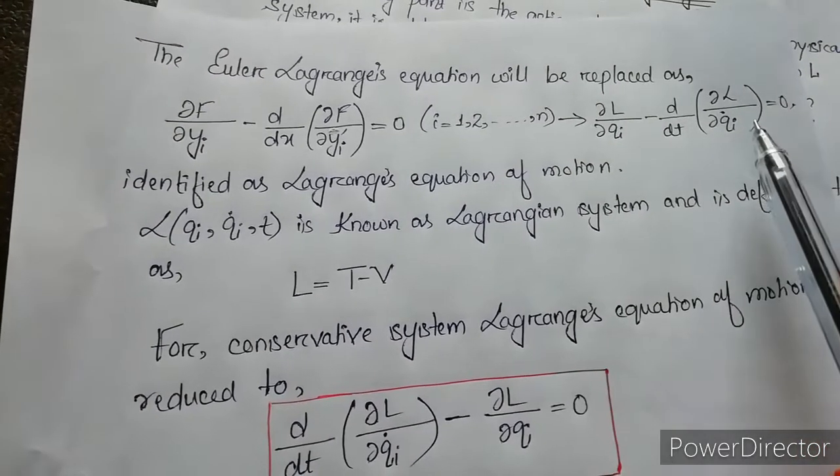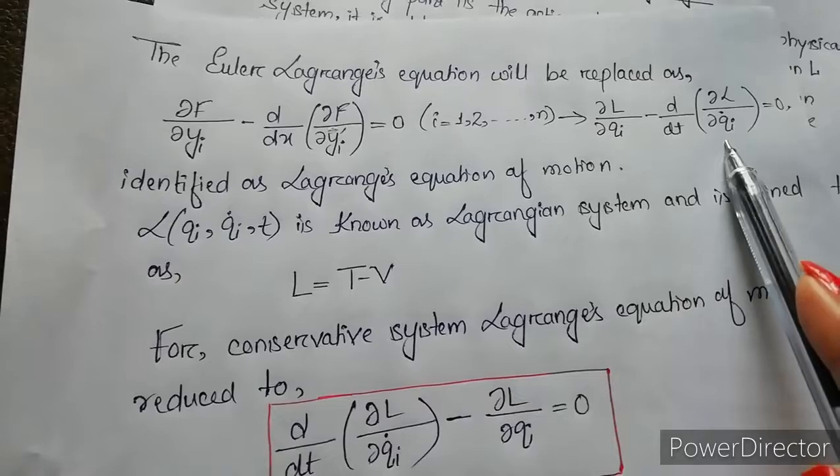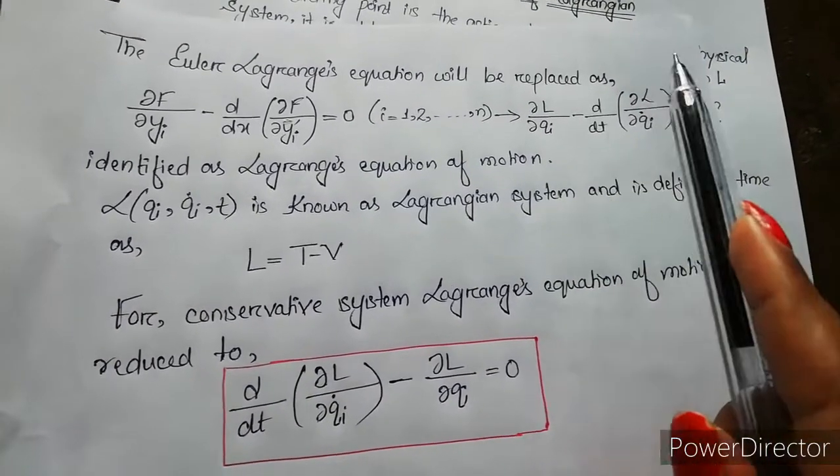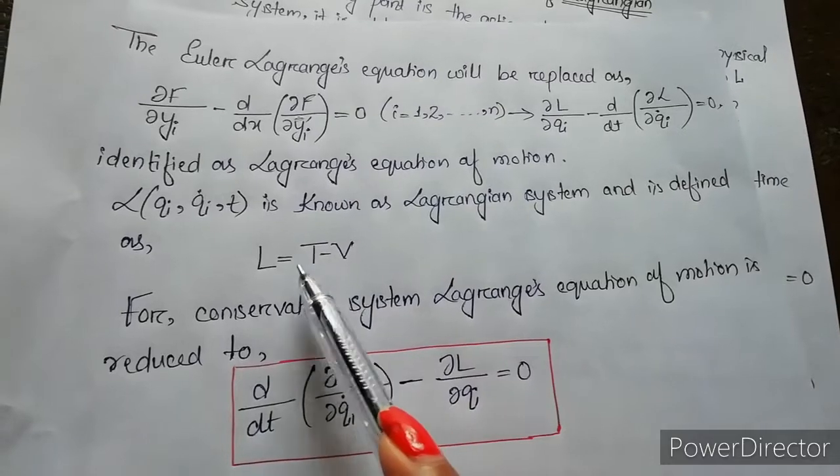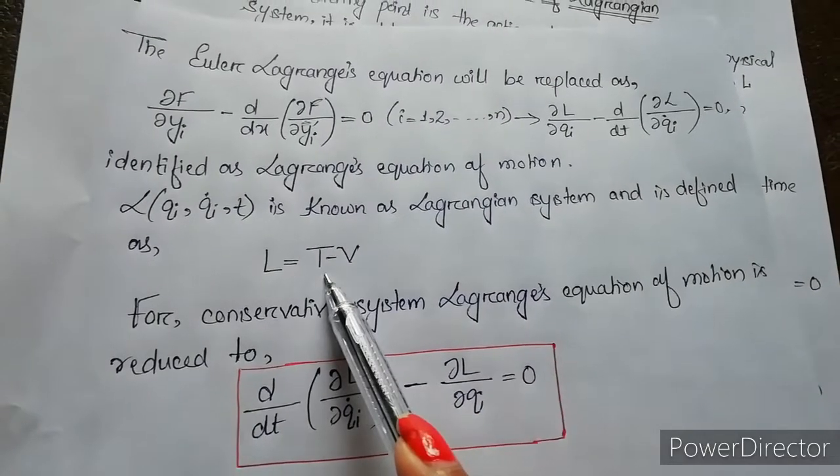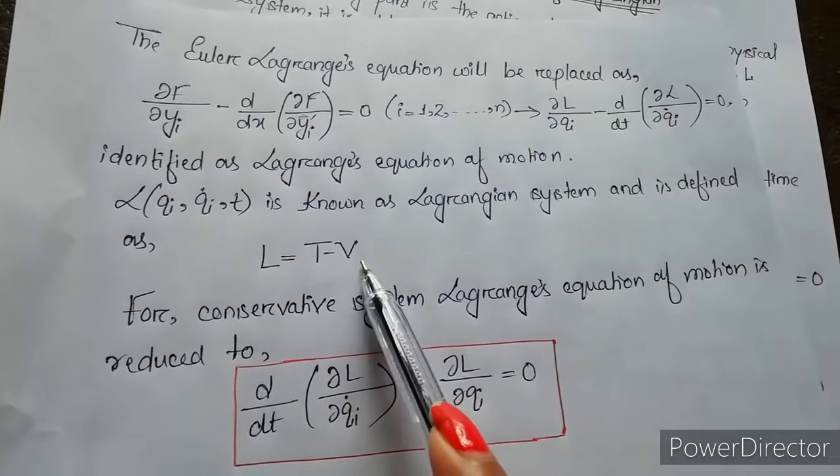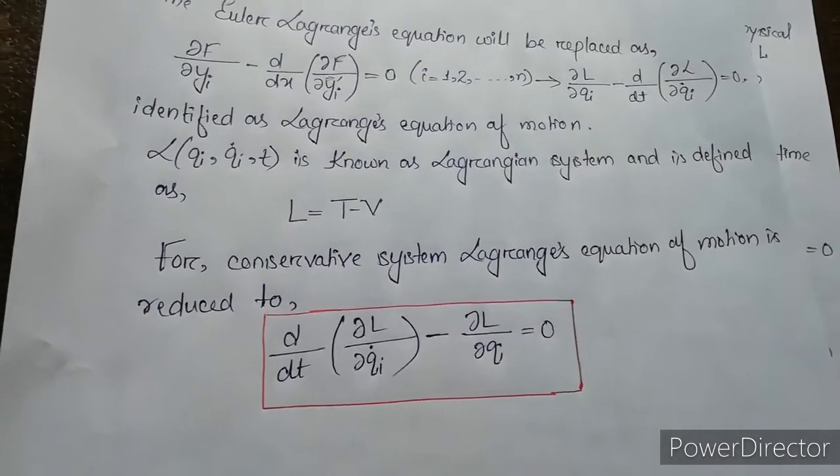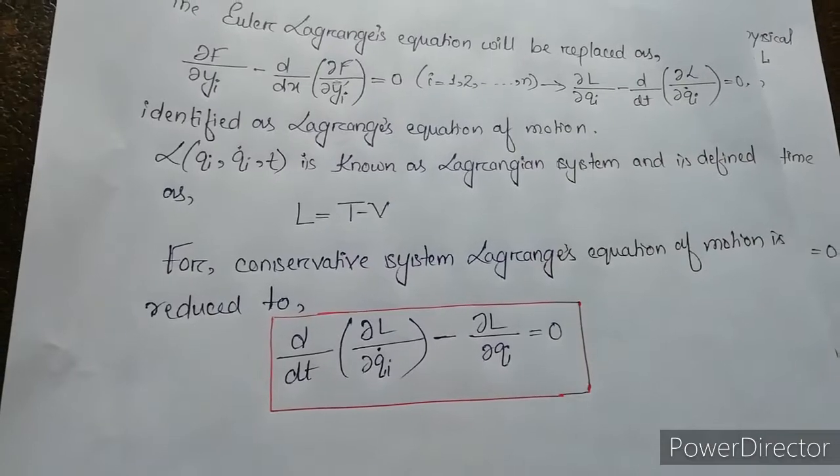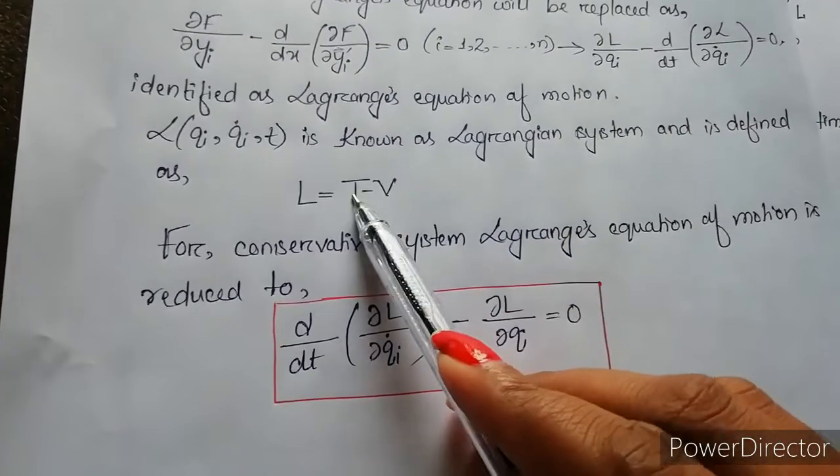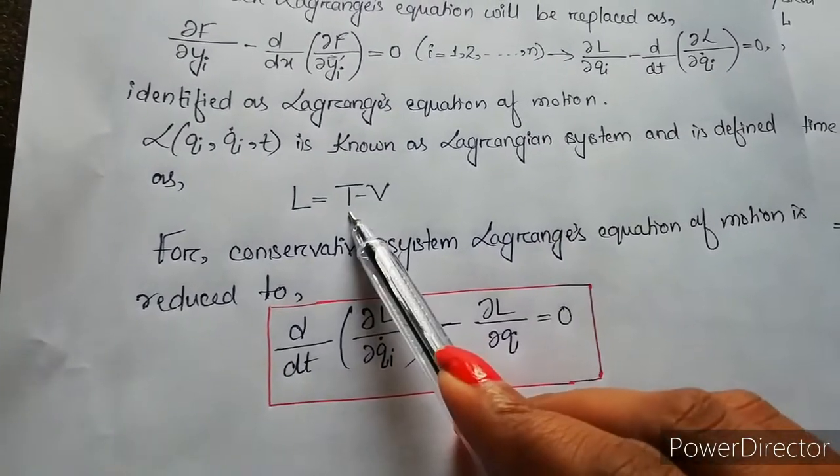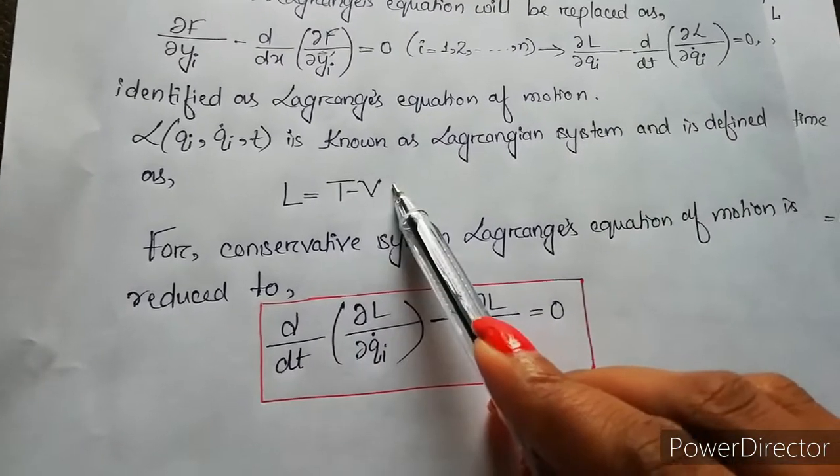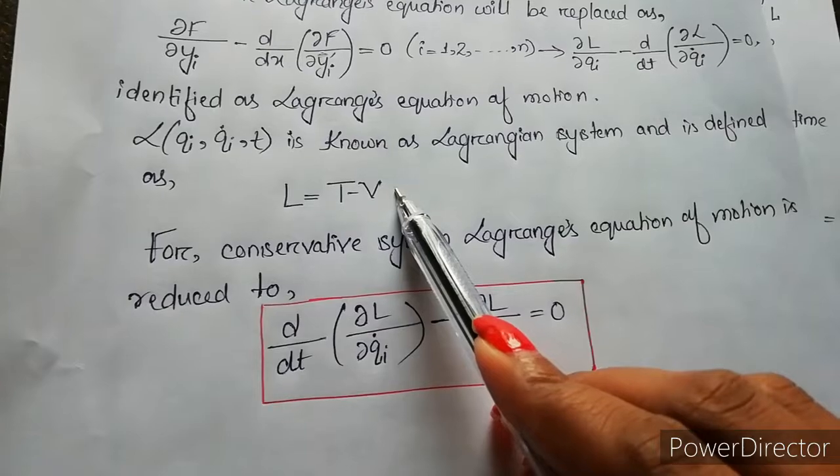Next, the Lagrangian L is defined as L equals T minus V, where T is the kinetic energy and V is the potential energy. We know that T equals half mv squared, where v in the kinetic energy is the generalized velocity.